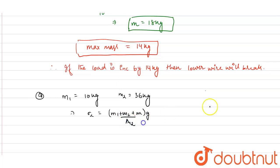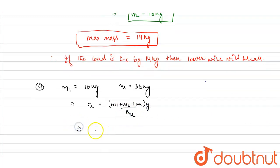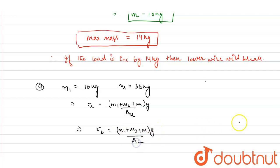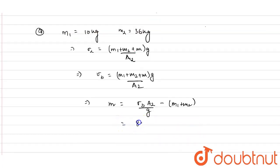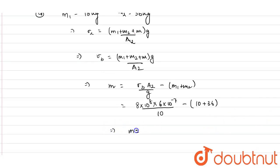Equating the stress in the second wire to the breaking stress: σ_b = (m1 + m2 + m) × g / A2. From here: m = (σ_b × A2 / g) − (m1 + m2). Substituting: σ_b = 8 × 10⁸, A2 = 6 × 10⁻⁷ m², g = 10 m/s², m1 = 10 kg, m2 = 36 kg. We get m = 2 kg.